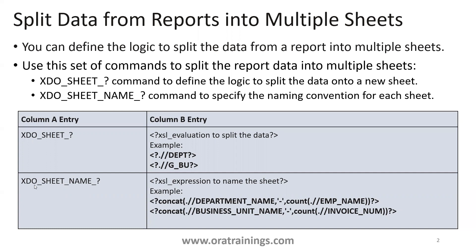In the second entry, we mentioned xdo_sheet_name, wherein we specify that the sheet name should have a value like department name followed by number of employees in that department. Another example: you can specify a business unit name followed by the number of invoices in that particular business unit. These are two very important key entries used to split the data into multiple sheets.